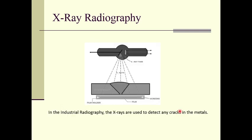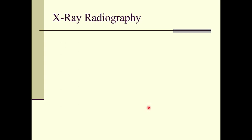In industrial radiography, an X-ray source or X-ray tube — we know the Coolidge tube that produces X-rays — is used. The X-rays are incident on a metal sample. In order to detect any cracks or fractures inside the metals, X-rays are incident on them and the transmitted X-rays are received by a detector. A photographic film is placed on the detector, creating a 2D picture of the received X-rays.